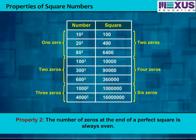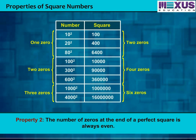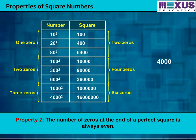The number of zeros at the end of a perfect square is always even. In other words, a number ending in an odd number of zeros is never a perfect square. For example, 400 is a perfect square, as the number of zeros are 2, which is even. And 4000 is not a perfect square, as the number of zeros are 3, which is odd.